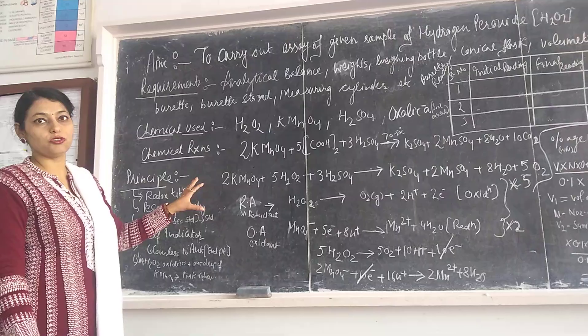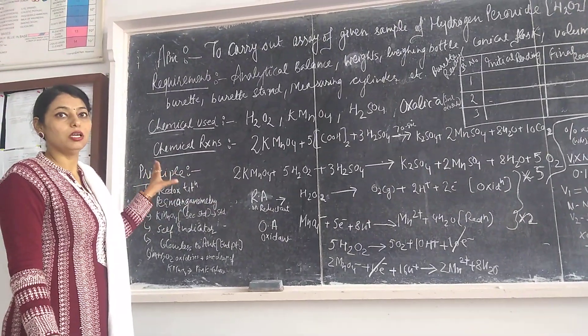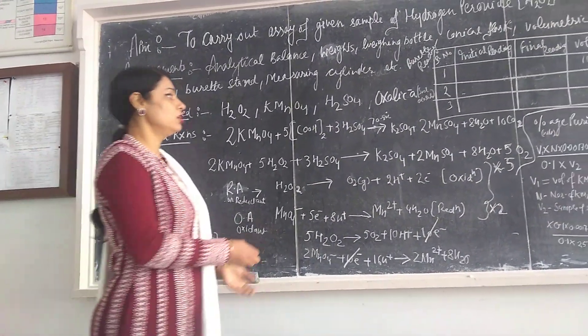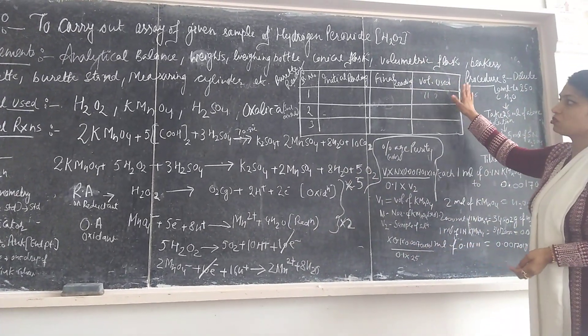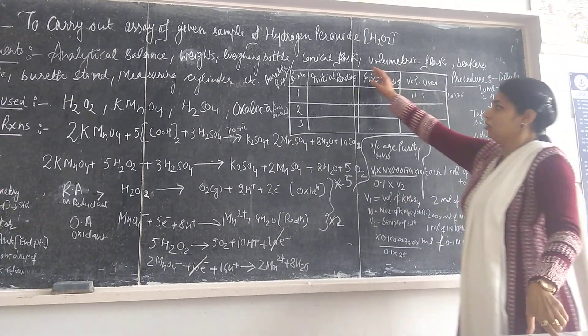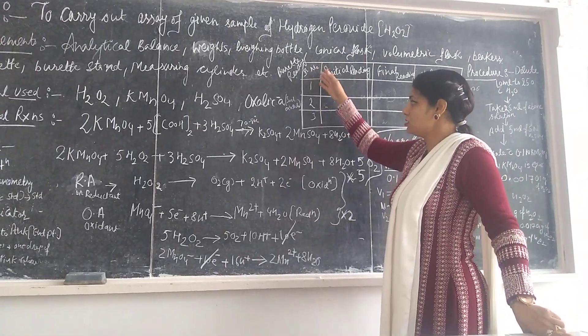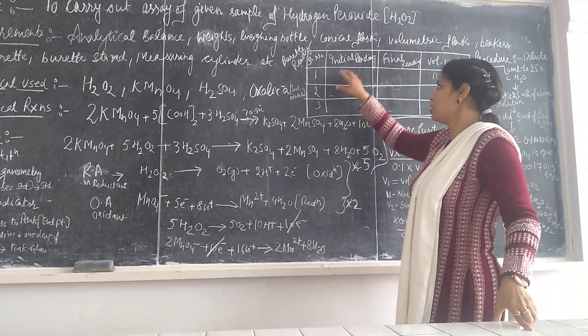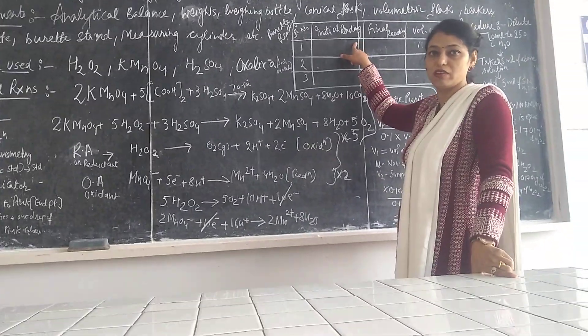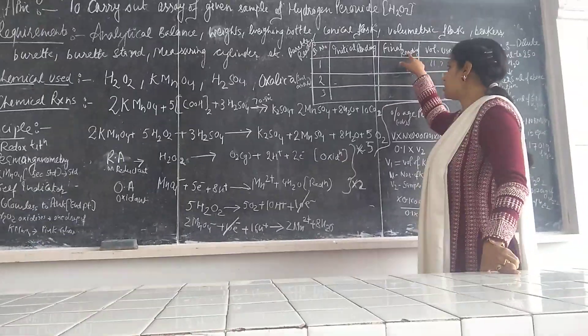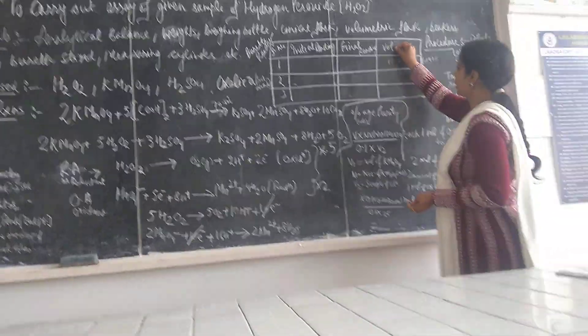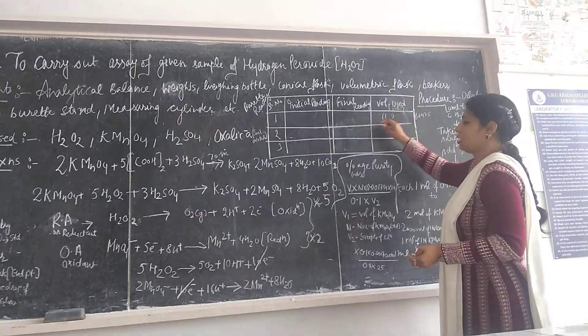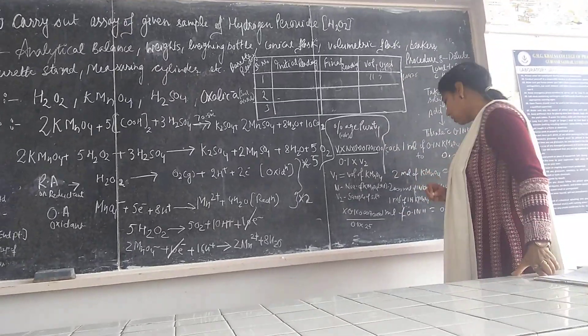So here are some calculations. This is your burette reading, you have to take three readings. This is according to serial number, here you put your initial reading in milliliters, then this is your final reading, and this is your volume used.